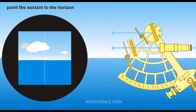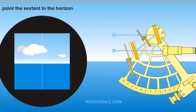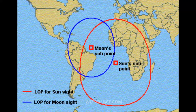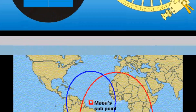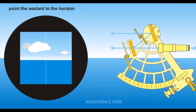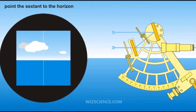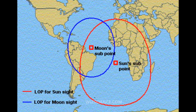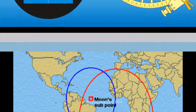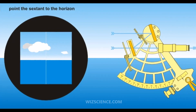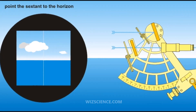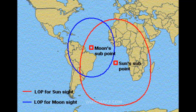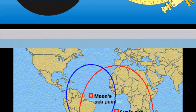Celestial navigation, also known as astronavigation, is the ancient art and science of position fixing that enables a navigator to transition through space without having to rely on estimated calculations or dead reckoning. Celestial navigation uses sights, or angular measurements taken between a celestial body and the visible horizon. The Sun is most commonly used, but navigators can also use the Moon, a planet, or one of 57 navigational stars whose coordinates are tabulated in the nautical almanac.